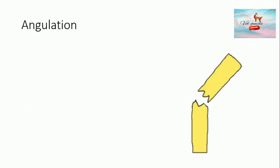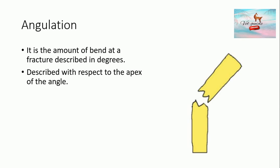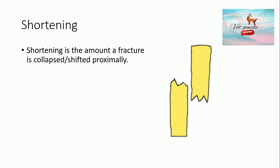Angulation is the amount of bend at a fracture and it is described in degrees. Angulation is described with respect to the apex of the angle, as shown in the following figure. Shortening is the amount which shows how much a fracture has collapsed or shifted proximally, and it is expressed in centimeters.